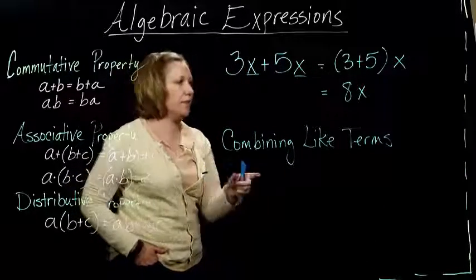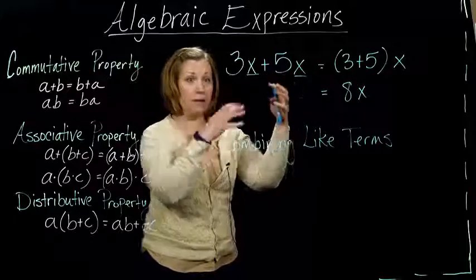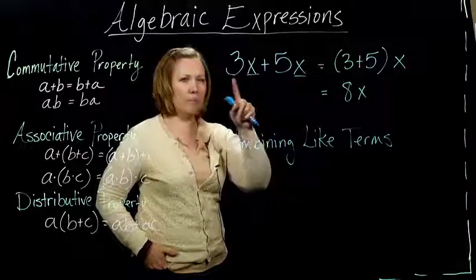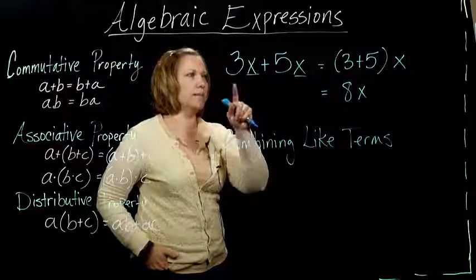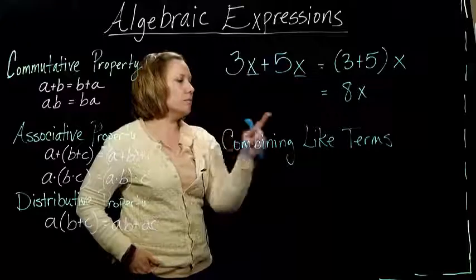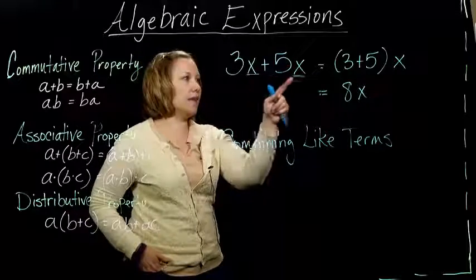What they mean is we're combining - combining means to put together. And 'like' means they are the same, but they aren't completely the same. The number part's different, but the variable part's the same. That's what they mean by like - the like is the variable part.